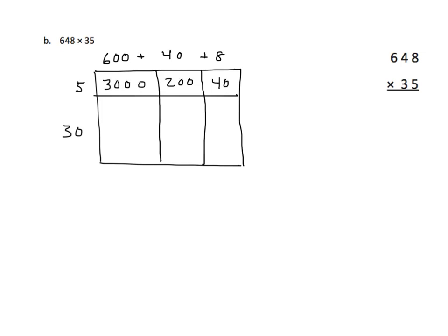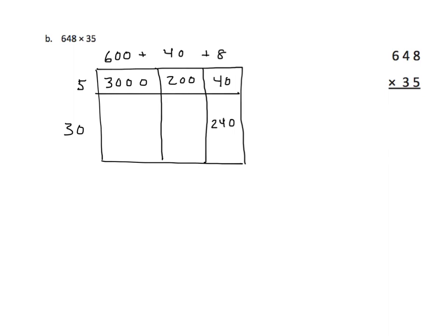I'm going to multiply 3 tens times 8 ones. I get 240, 24 tens. We're going to now multiply 3 tens times 4 tens, and that gives us 12 hundreds. And we're going to multiply 6 hundreds times 3 tens, and that gives us thousands. So we're going to have thousands.